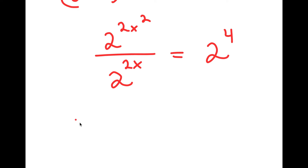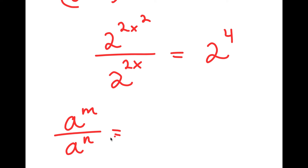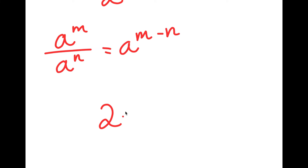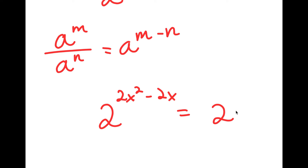From here, if I have something in the form a to the power of m over a to the power of n, this is equal to a to the power of m minus n. So 2 to the power of 2x squared over 2 to the power of 2x is going to equal 2 to the power of 2x squared minus 2x, which is equal to 2 to the power of 4.